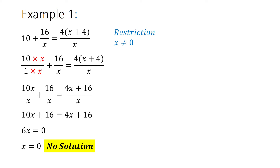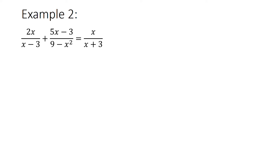Let's do another example. This one is a little bit more difficult, because you're not sure how to start with your restriction. The reason for that is because there are so many different denominators. So I would say first try and find your LCD, then do your restriction.